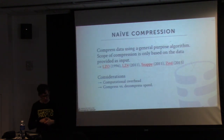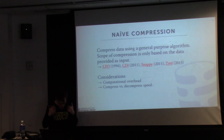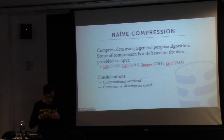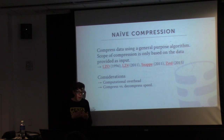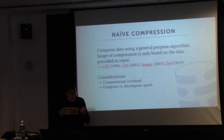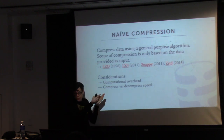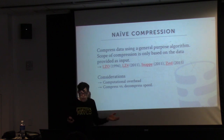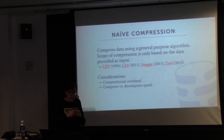Naive compression is using off-the-shelf compression algorithms on our data. If you do that, the database system treats compressed data as a black box — it doesn't know anything about its contents. Therefore, to execute any queries on it, unless you have a zone map, you have to decompress it entirely, regardless of granularity. You can't infer anything because you don't know how the data was compressed.